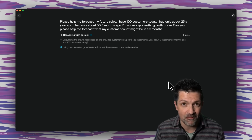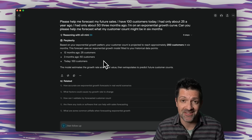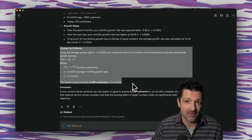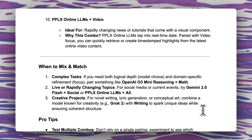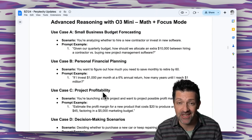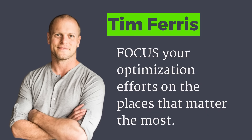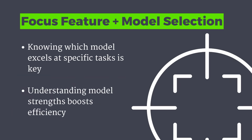It's really cool to watch this O3 Mini reasoning model connect with that math focus feature. It says in about six months you should have about 200 customers. You can see it's capable of some really complex math, and I have not had any problems with this recently — in the past, math was something these AI models really struggled with. In the cheat sheet, I have a lot of different ways to use this, different ways of mixing and matching AI models with focus features. It's great for financial planning, decision making, project profitability, and more. Tim Ferriss always talks about focusing your optimization efforts in the places that matter most, and understanding which model excels at which tasks is one of those major leverage points.